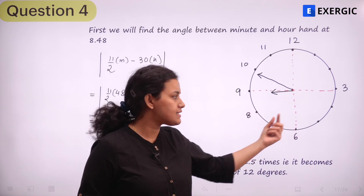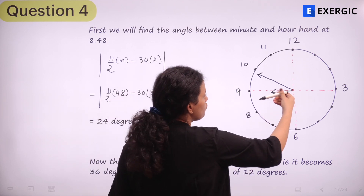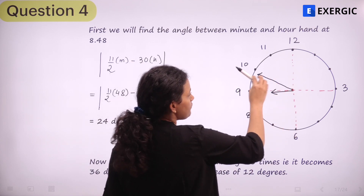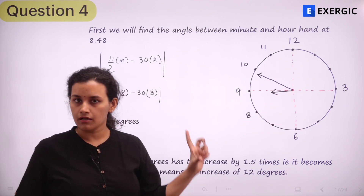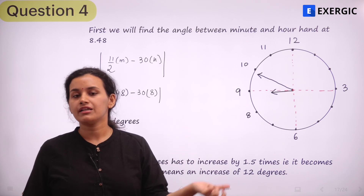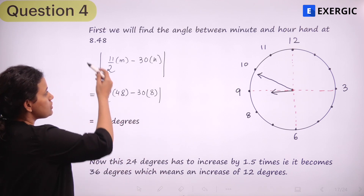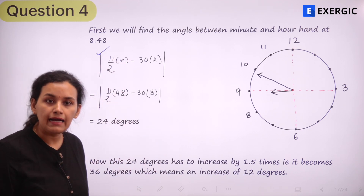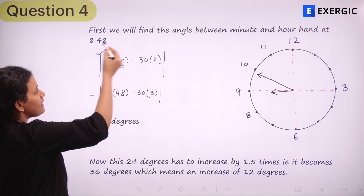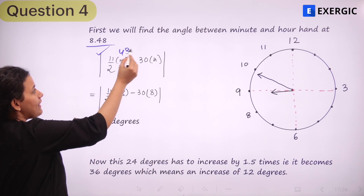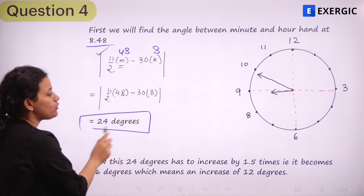At 8:48, the hour hand is very close to 9, and 48 minutes means the minute hand is somewhere near 10. You can calculate this angle using the 6 degrees per minute and half degree per minute rates, or use the formula directly. Here, m (the minutes part) is 48 and h (the hour part) is 8. Substituting, you get 24 degrees.